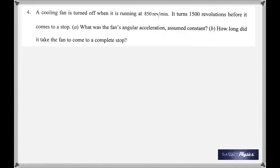From the frequency we can find the initial angular velocity. Since the angle covered in one revolution is 2π radians, if you multiply 2π by 1,500 you get the total angle it sweeps before stopping. Those are the terms we have.